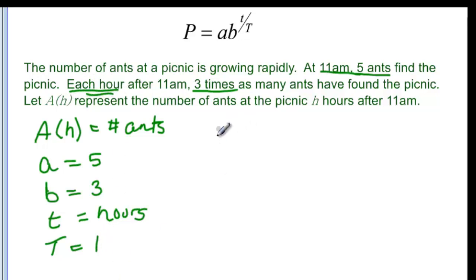So if we apply it then we have a of h is equal to our a, which is five, times our b, which is three, raised to the t, or h, since we're talking about hours, and it would be divided by one. So it's really, in this case, just to the h.